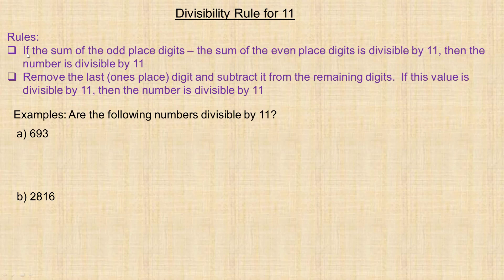Rule number one: you can tell if a number is divisible by 11 if the sum of the odd-place digits — the first, third, fifth, etc. — minus the sum of the even-place digits — the second, fourth, sixth, etc. — is divisible by 11. You can subtract in either order; it doesn't matter.